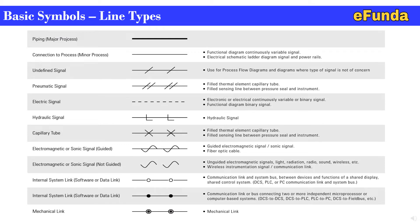A mechanical link is represented by a single straight line with two solid circles, each surrounded by one more circle. This is how various types of line symbols are defined. We have covered them in brief so you have a good understanding of line types and their meanings.